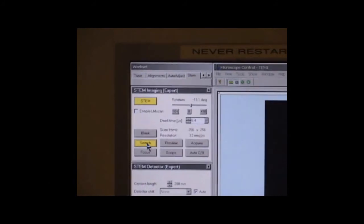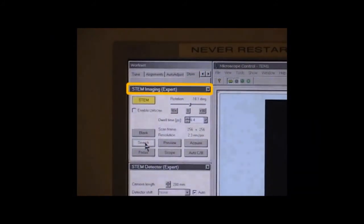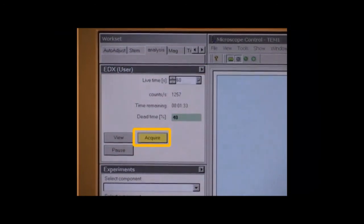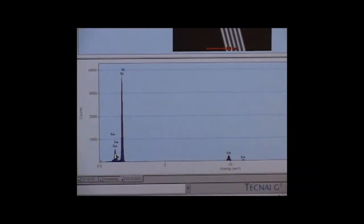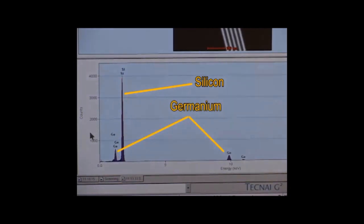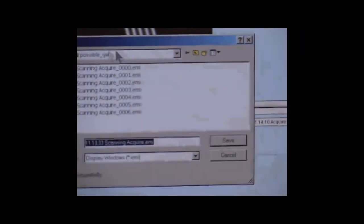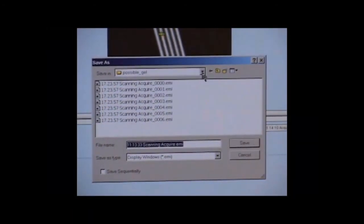We can do EDX in TEM mode, but in STEM, since the beam is focused to a probe diameter about 1 nanometer, we can better locate the position for analysis. In the Microscope Control, click STEM, STEM Imaging, and Search. Locate an area that has the feature you want to analyze. Under Microscope Control, Analysis, EDX User, click Acquire. The energy spectrum reveals peaks for silicon and germanium. To save the EDX data, click the disk icon on the right of the screen. Locate a directory and save the EMI file.